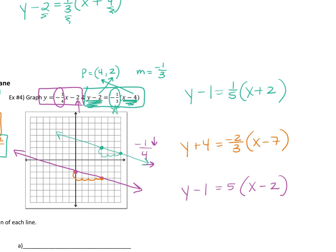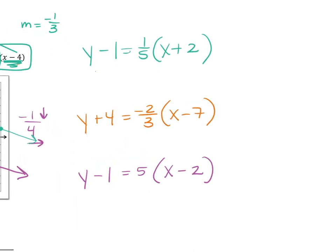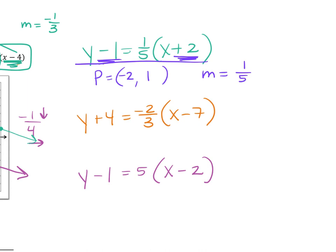Speed round — three different equations. I want the point and slope for each. First equation: swap and change signs — the point is (−2, 1) and the slope is one-fifth. Second equation: the point is (7, −4) and the slope is negative two-thirds. Swap places: x moves to y position, y moves to x position, then change the sign of each.